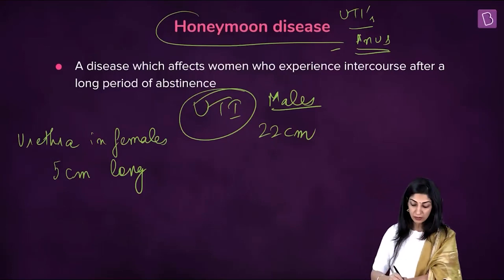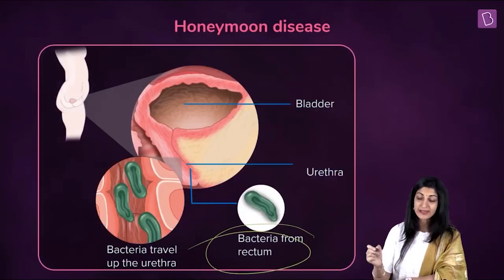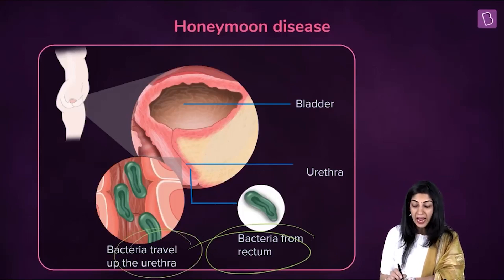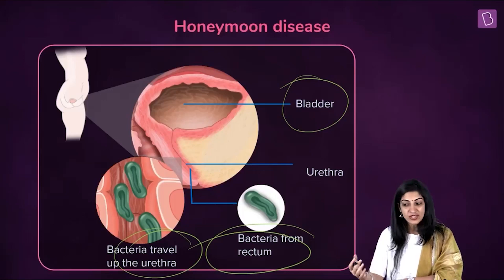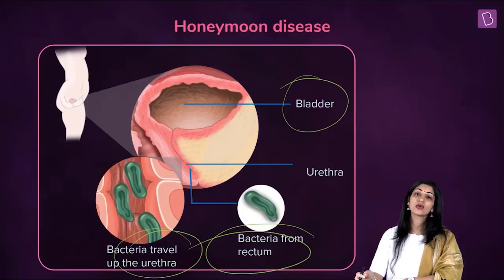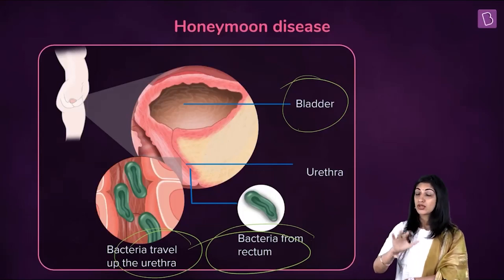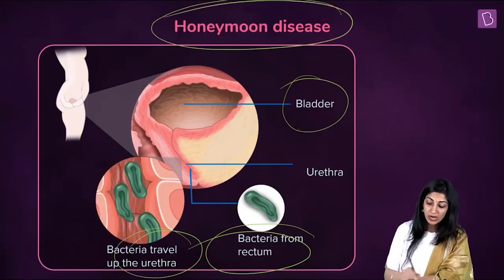This is why UTIs are common in females: a short urethra and all orifices in one single line, very close to each other — and that is called honeymoon disease. The bacteria from the rectal or anal area travel up the urethra and can reach the urinary bladder. If a UTI remains untreated it can be serious — there will be itching, painful urination, and in severe cases bleeding. Doctors have to give high doses of antibiotics, and UTI can sometimes go undiagnosed.